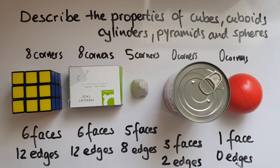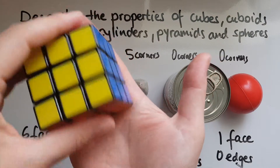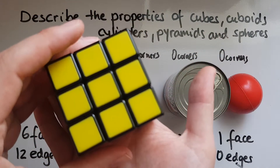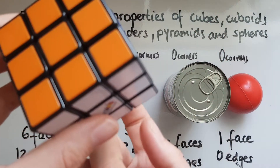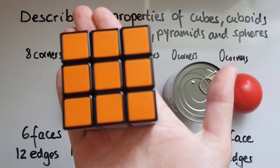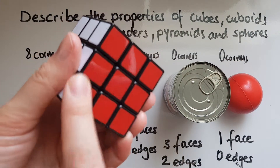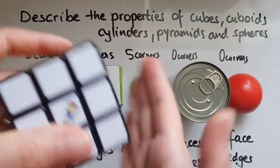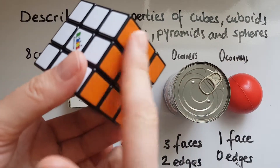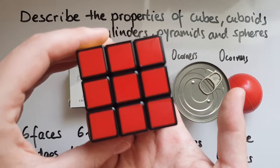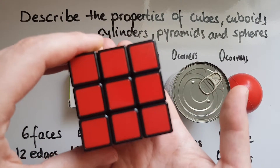The final thing we'll look at is the base. The base is the face that the shape sits on. So at the moment this cube is sitting on this face, so that is the base of this cube. But I could turn it around and then this would be the base — it's what it's sitting on. What shape is the base? It is a square, because it's got equal sides. So the base of the cube is a square.